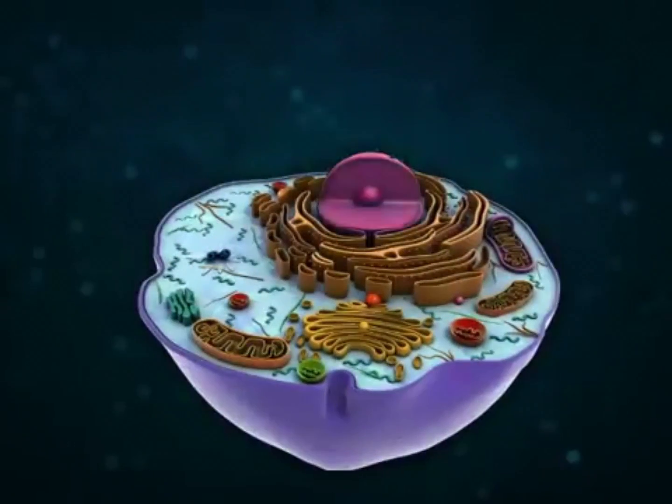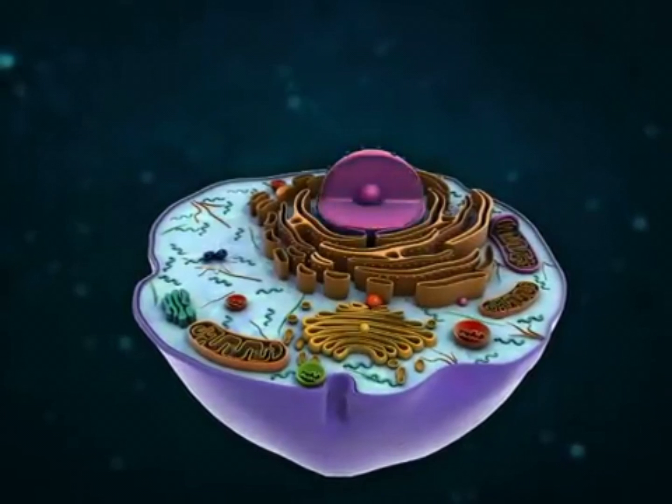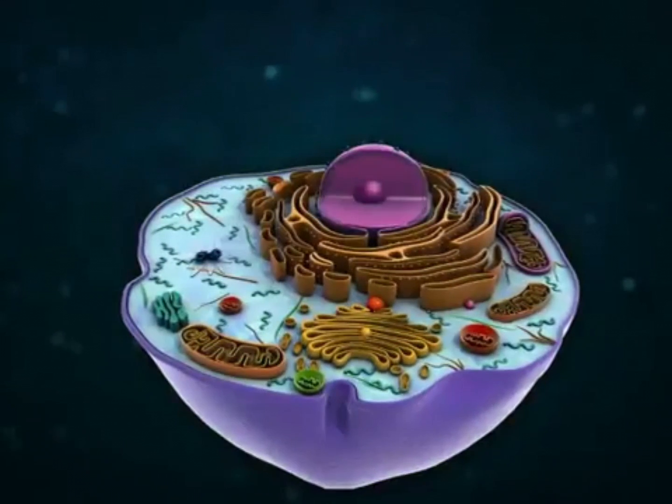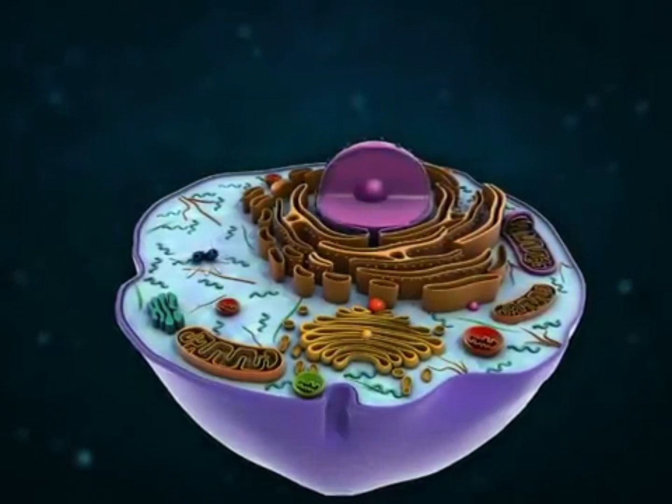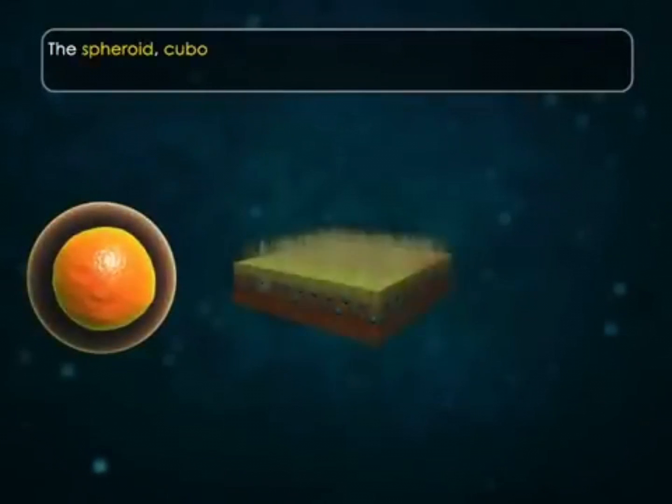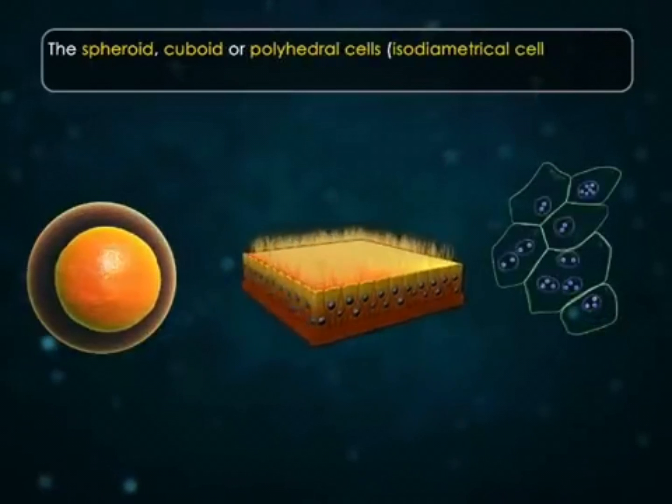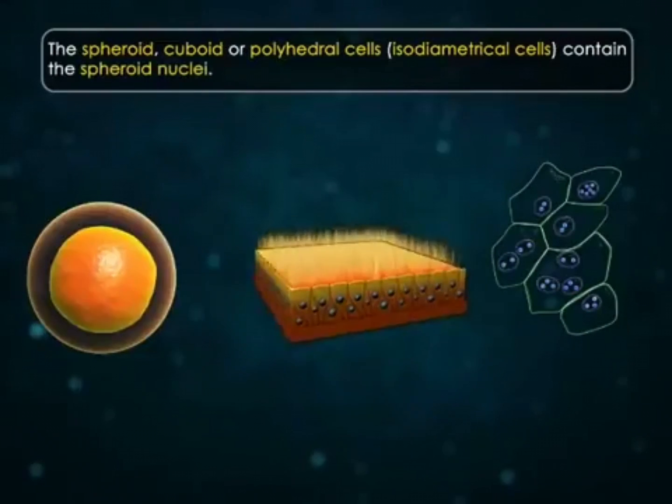The shape of the nucleus normally remains related to the shape of the cell, but certain nuclei are almost irregular in shape. The spheroid, cuboid, or polyhedral cells (isodiametrical cells) contain spheroid nuclei.